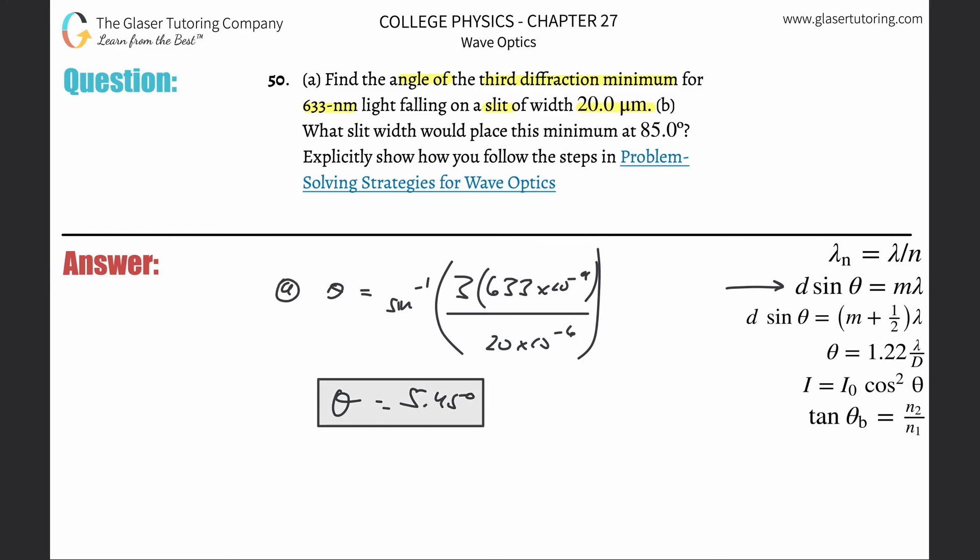And how about letter b? What slit width would place this minimum at 85 degrees. So it's the same exact problem, basically same formula. d sine theta is equal to m lambda.